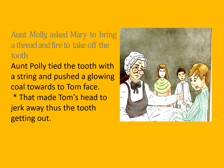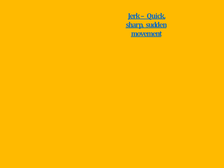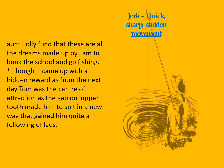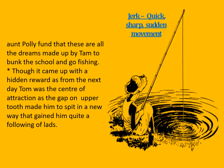Aunt Polly asked Mary to bring a thread and fire to take out the tooth. Aunt Polly tied the loose tooth with a string and pulled it, glancing towards Tom's face. That made Tom's head jerk away, and thus the tooth came out. Aunt Polly found that these were all schemes made up by Tom to bunk school and go fishing, though it came with a hidden reward — from the next day Tom was the center of attraction, as the gap from the upper tooth made him spit in a new way, which gained him quite a following of laughs.